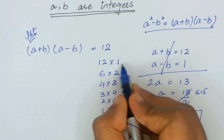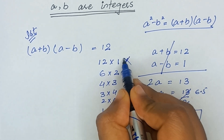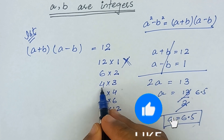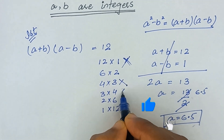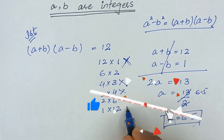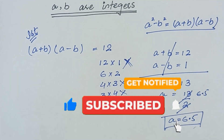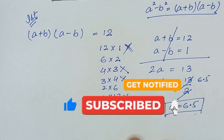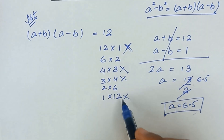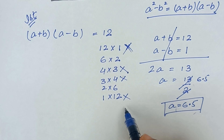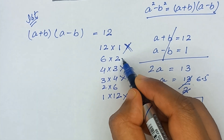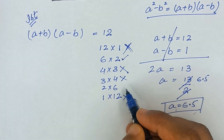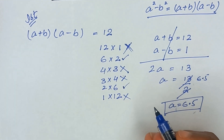So those factor pairs are eliminated. Similarly, 4 and 3, 3 and 4, and 1 and 12 are also eliminated because they do not give integer values of a and b. That means we are left with two valid factor pairs: 6 and 2, and 2 and 6.